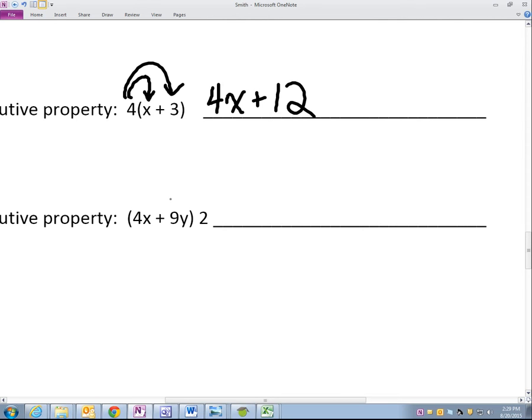So we have two times four X, which is? Everyone? Eight X. Beautiful. Two times nine Y is? Eighteen Y. Because I want to know. Eighteen Y. Eight. Eight.